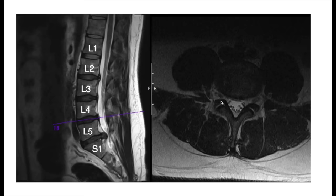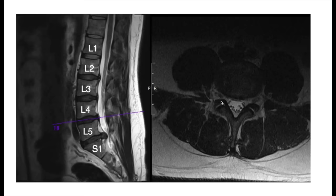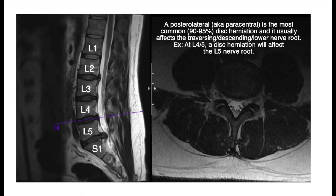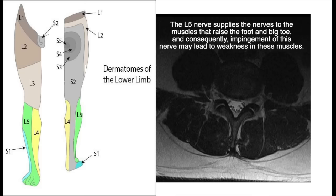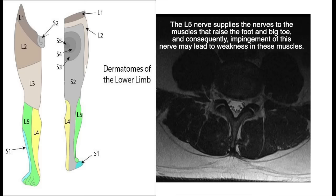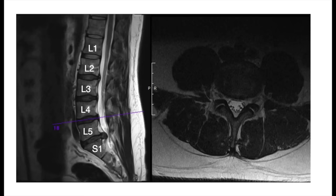If we go back up to the L4-L5 level — if there was a disc herniation on this side, remember the right side of the body — it would usually affect the lower nerve root, so the L5 nerve root on the right side. The patient would have numbness and tingling in the L5 distribution, which is the dorsum of the foot. The L5 nerve root also innervates the extensor hallucis longus — the muscle that elevates your big toe — so the patient may have weakness in that muscle, as well as the gluteus medius, meaning they may have trouble abducting or lifting their hip from the mid portion of their body.